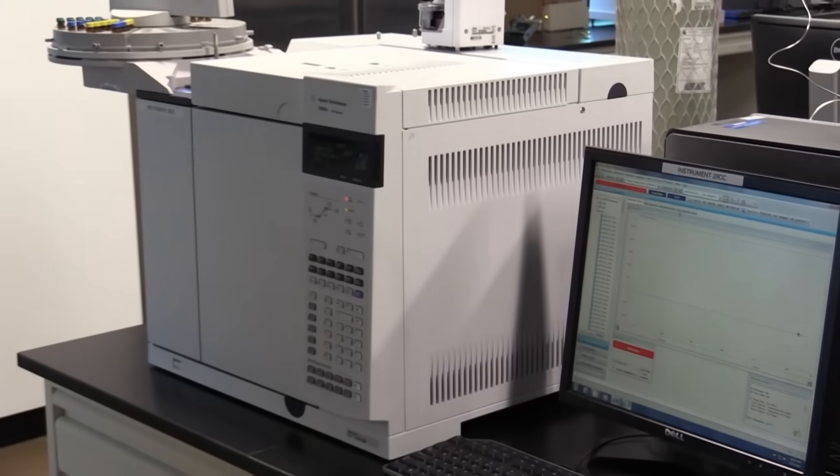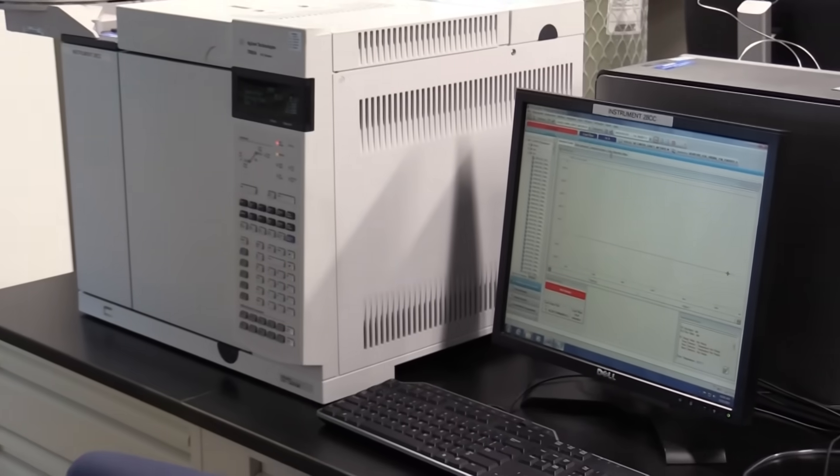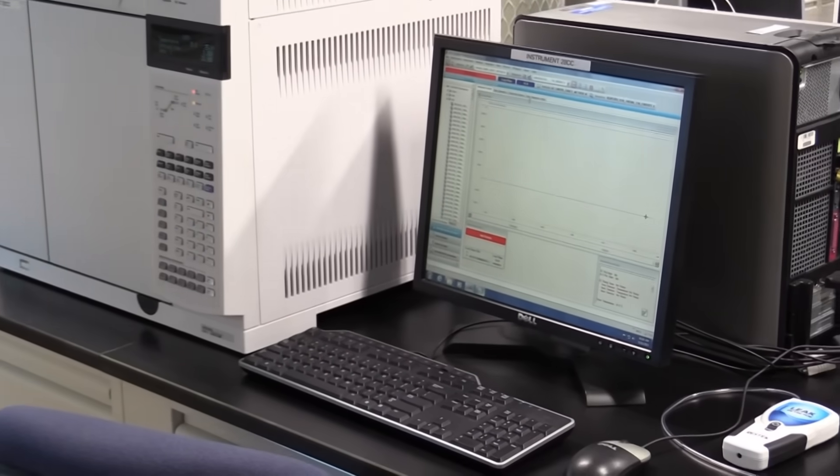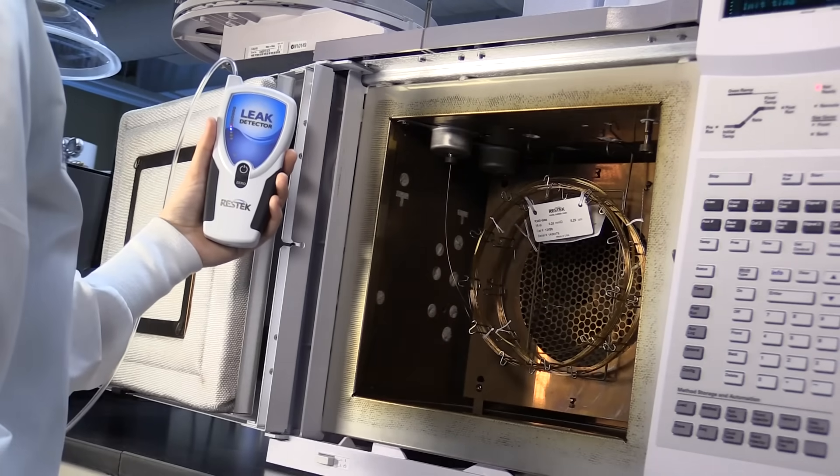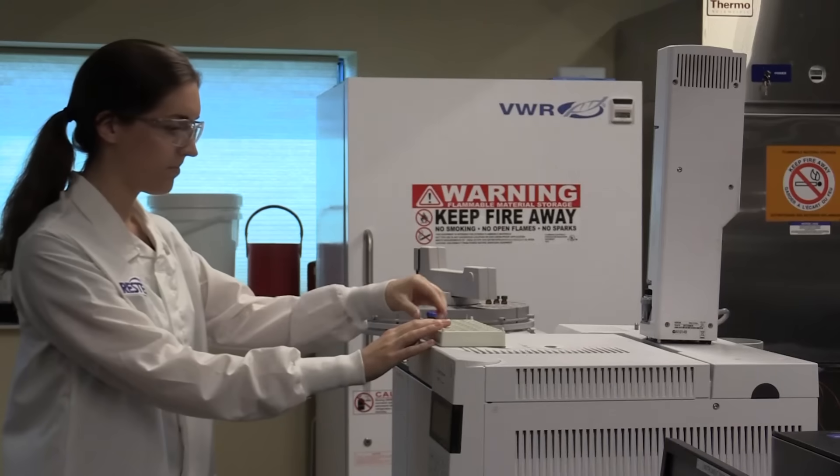Even a small leak in your GC or gas lines can result in a loss of sensitivity, sample, and valuable high purity gas. A leak can also damage your column and instrumentation as well as contaminate samples.